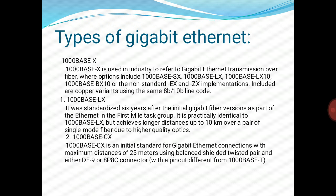The various types of Gigabit Ethernet begin with 1000BaseX, used in industry to refer to Gigabit Ethernet transmission over fiber. Options include 1000BaseSX, 1000BaseLX, 1000BaseLX10, 1000BaseBX10, and non-standard EX and ZX implementations, as well as copper variants using the same 8B/10B line code. 1000BaseLX achieves longer distances up to 10 kilometers over single-mode fiber due to higher quality optics. 1000BaseCX is an initial standard with a maximum distance of 25 meters, using balanced shielded twisted pair and either DE9 or 8P8C connectors.